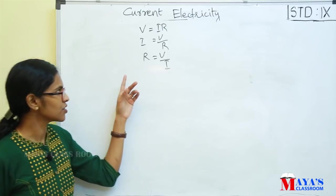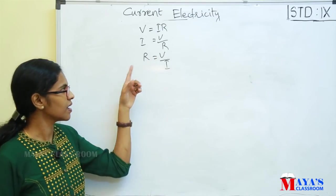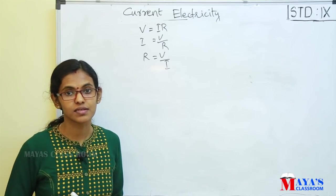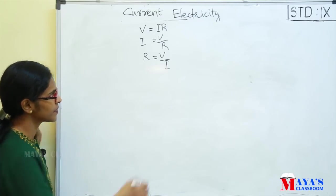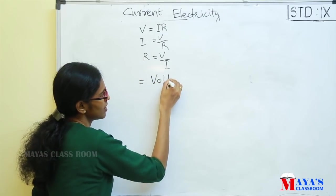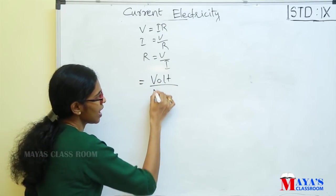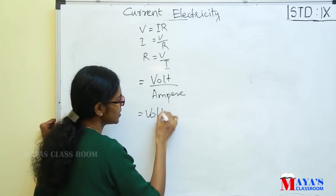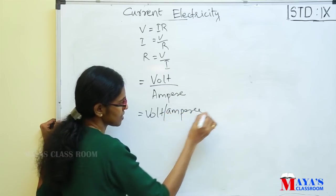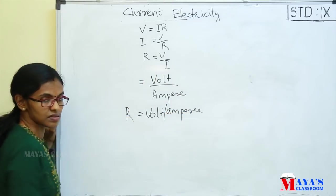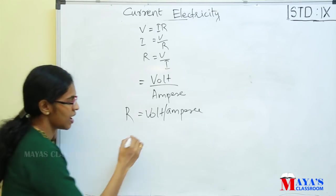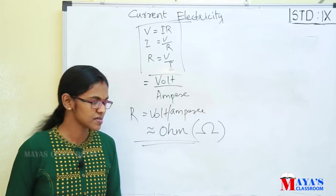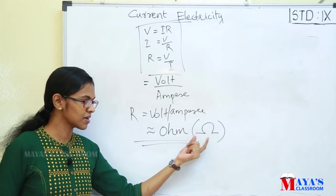Now, what is the R equation? R equals V by I — that is resistance. What is the unit of resistance? The voltage unit is volt, and the current unit is ampere. So we call the unit of resistance Ohm. The unit of resistance, Ohm, is represented by the Greek letter Omega.